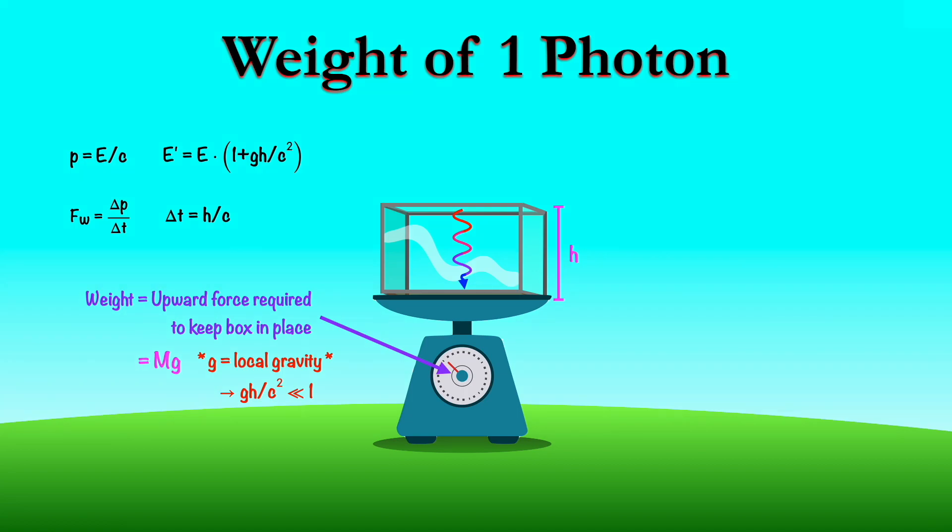Now we have to find the change in momentum. The change in momentum is going to be the momentum imparted at the top when the photon is emitted, plus the momentum imparted at the bottom when the photon is absorbed. And remember that momentum is just the energy divided by c, the speed of light. So we're going to have that the change in momentum is E prime over c minus E over c, and it's minus because at the top the momentum gets imparted upwards, and at the bottom it gets imparted downwards, so they're in opposite directions.